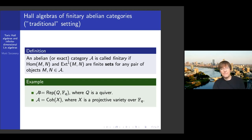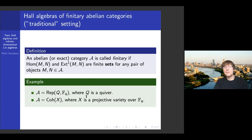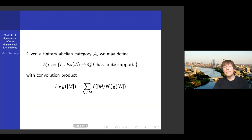The two main examples of finitary abelian categories are: quiver representations, where a quiver is a directed graph and a representation attaches vector spaces and linear maps along the edges — the category of quiver representations over a finite field has this property — and coherently, the category of coherent sheaves when X is a projective variety over a finite field.